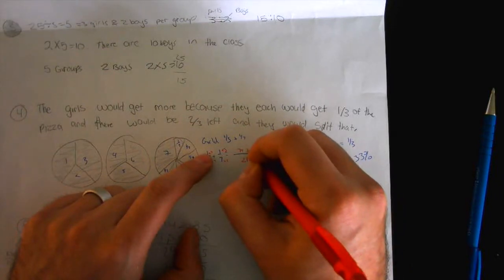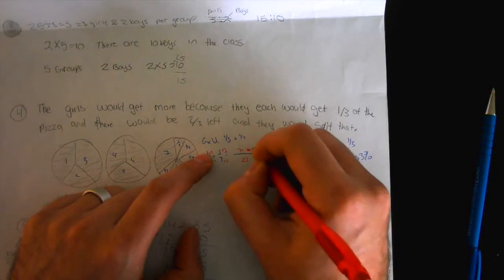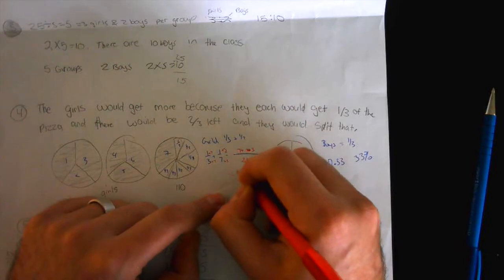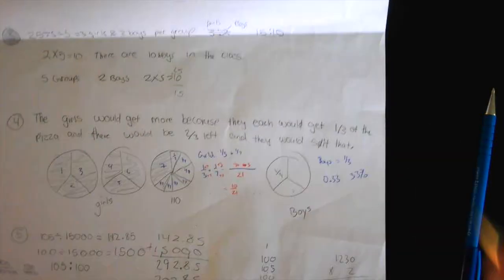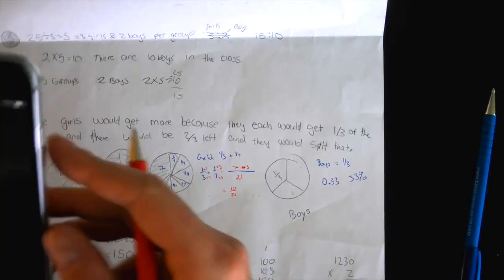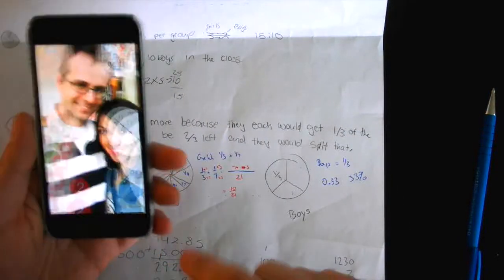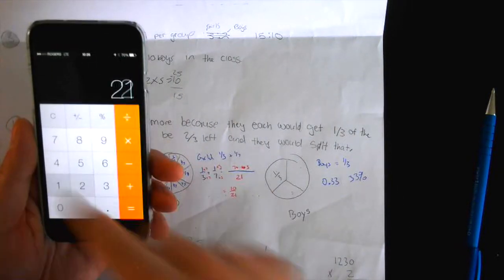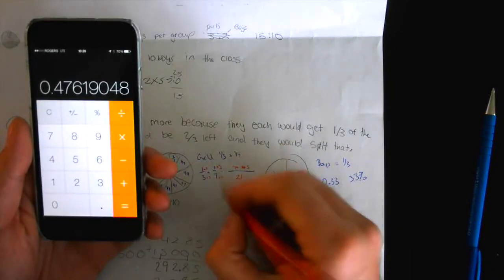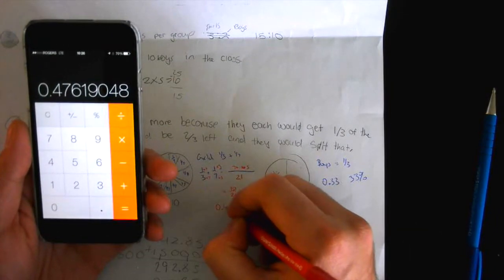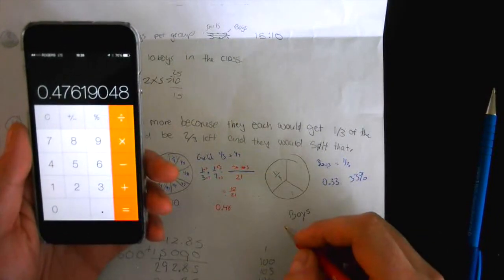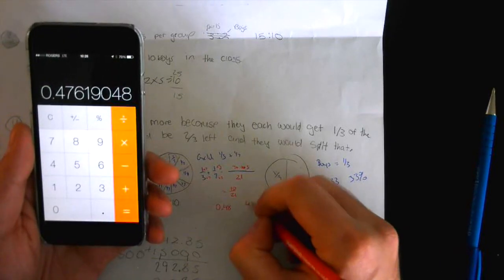So seven plus, sorry, whoops, plus three equals 10 over 21. And if you divide 10 by 21, let's see here, it gives you about a decimal of 0.48, which is 48%.